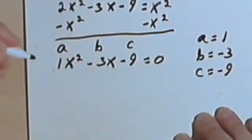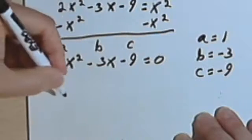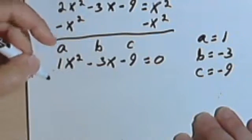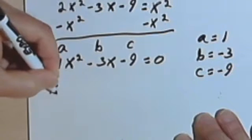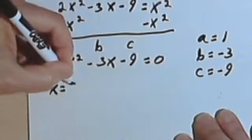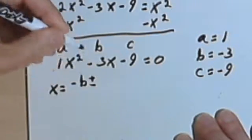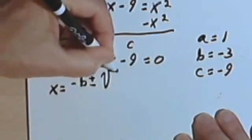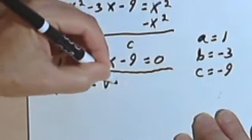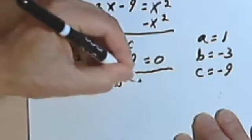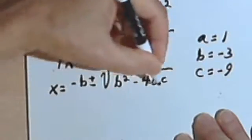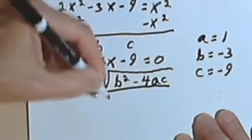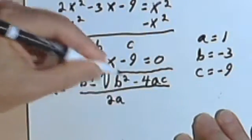Now we're going to write the quadratic formula, which you want to make sure you've got memorized. Okay, so the quadratic formula is x = (-b ± √(b² - 4ac)) / 2a.